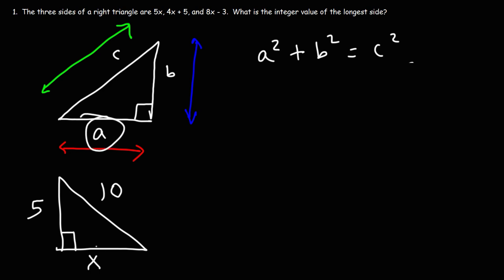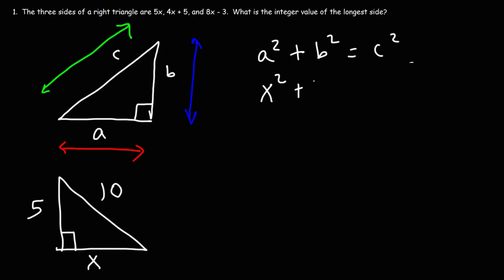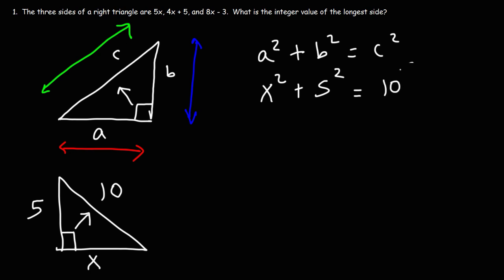In this problem, A is equal to X, so we replace A squared with X squared. B is the other leg, equal to 5, so instead of B squared we have 5 squared. Across the 90-degree angle is the hypotenuse, so C is equal to 10. Now we calculate: 5 squared is 25, and 10 squared is 100.